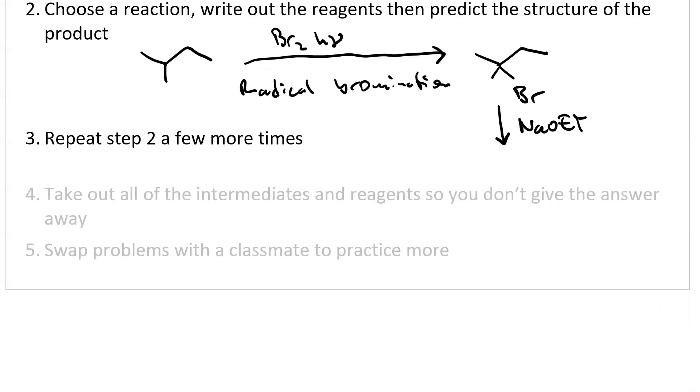Sodium methoxide is a nice, strong, non-bulky base that will always give me a Zaitsev outcome. And so there's my Zaitsev alkene. It's tri-substituted.